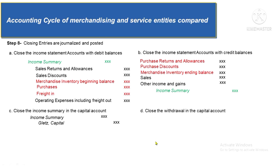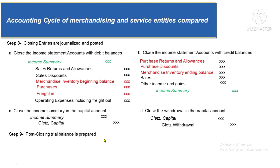The fourth closing entry aims to close the withdrawal account by crediting it and debiting the capital account. After these entries, the next step is to post all closing entries to the ledger. You can then expect that income statement and withdrawal accounts will be reduced to zero — that is the purpose of step 8. The capital account balance after posting will now match the ending capital balance in the statement of changes in equity. Step 9 is preparation of the post-closing trial balance, which is just listing the ledger account balances after adjustments and closing entries are posted.